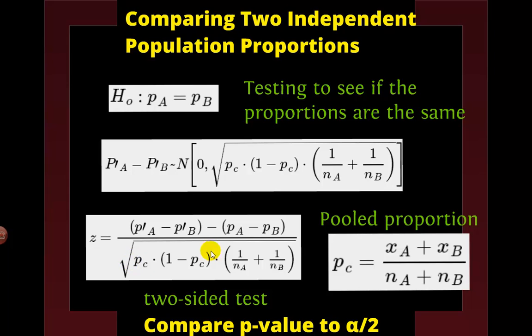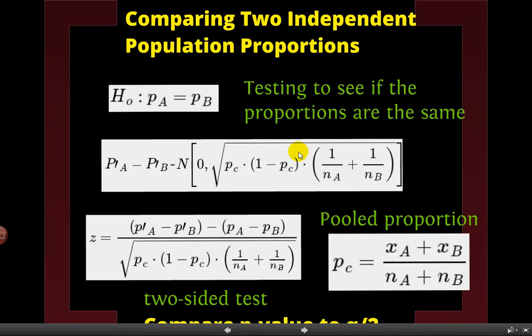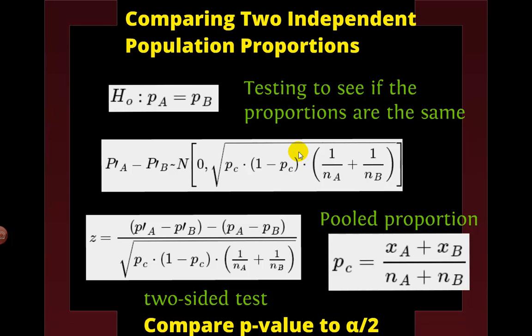We still subtract off our sample proportions here. We have to calculate our sample proportions. We have our population proportions, but again, these are going to be zero, so we can put a zero there. If we have a two-sided test, remember we compare our p-value to alpha over two, or double our p-value to alpha. We still do those pieces. Those parts haven't changed. The big parts that have changed are what goes into the denominator, basically, on all three types.